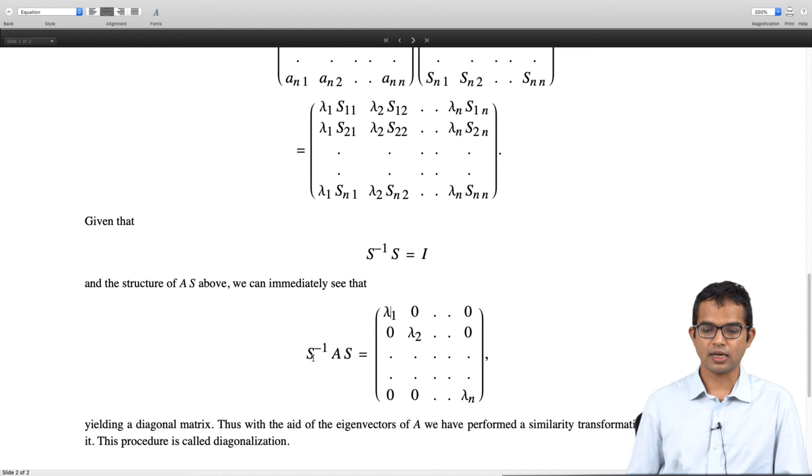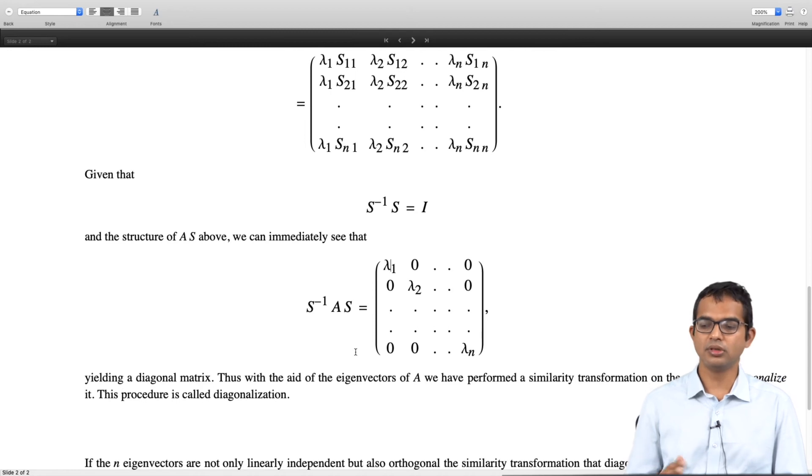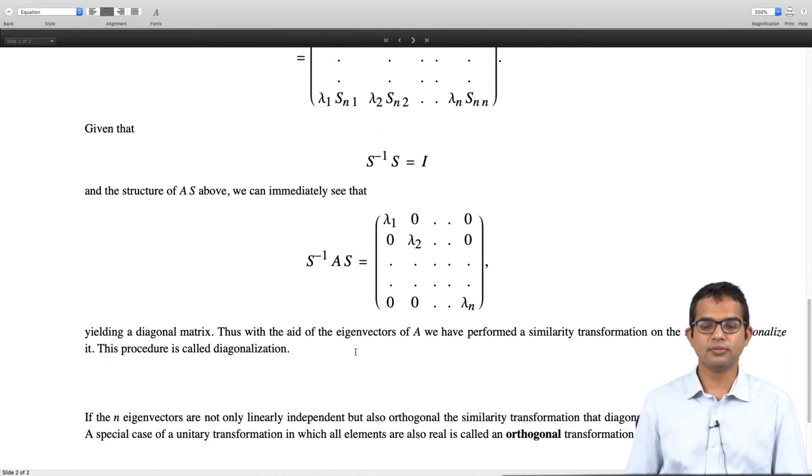But diagonalization involves finding this similarity transformation which puts your matrix in a very nice form. We will see later that this has important applications. Diagonalization of a matrix when it is possible to diagonalize a matrix gives you some, is a very nice thing to do because you can compute lots of properties of your matrix which are understood in terms of the eigenvalues, but also this similarity transformation which diagonalizes the matrix also contains a lot of information because all the eigenvector information is also enshrined in it.